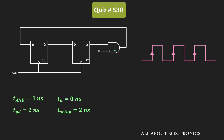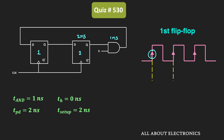Let us find the minimum required clock duration for the first flip-flop. After the first clock edge, the new input for the first flip-flop will be generated after the propagation delay of the second flip-flop — 2 nanoseconds — plus the propagation delay of the AND gate — 1 nanosecond. So the new valid input to the first flip-flop will be available after 3 nanoseconds. Once available, it should remain stable for the setup time of 2 nanoseconds.